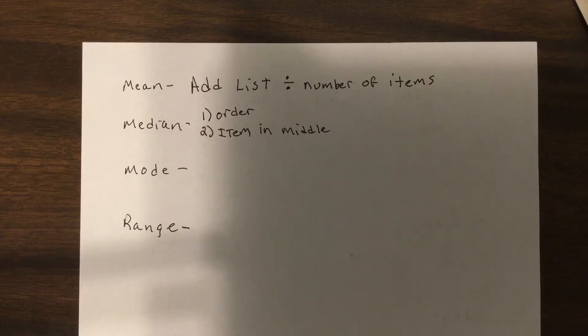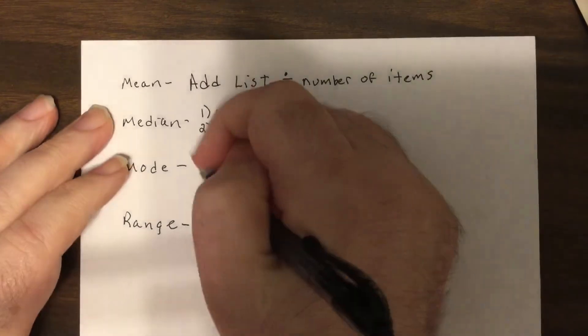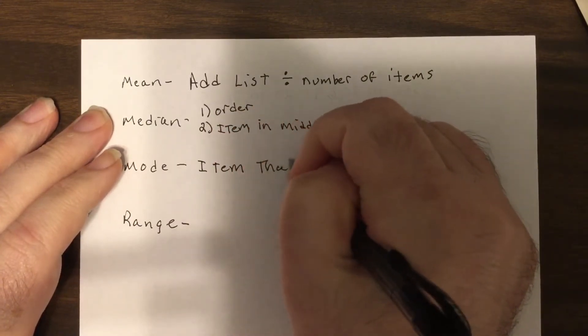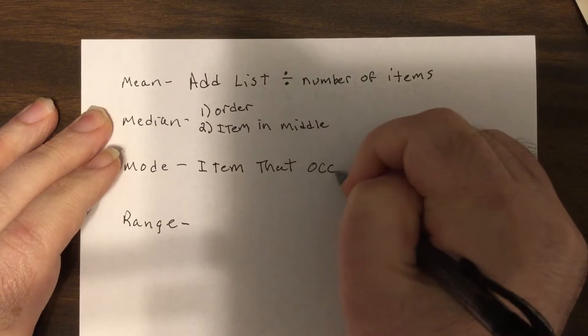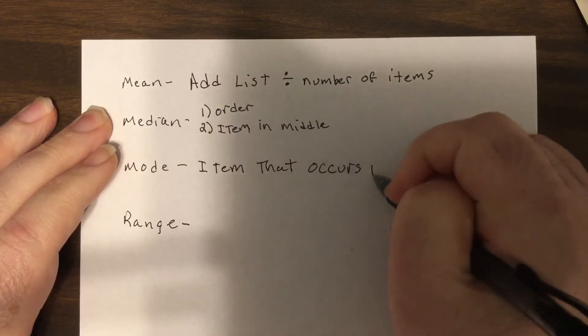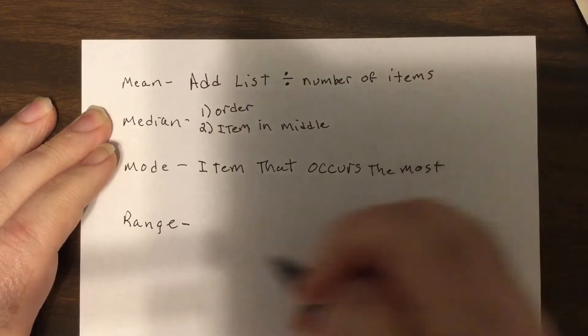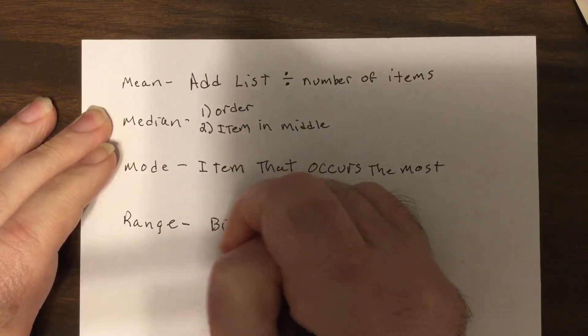Then the mode is just the item that occurs the most, and the range is just the biggest item.